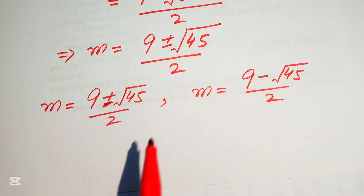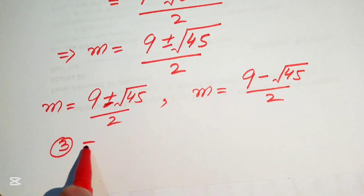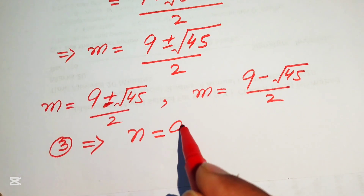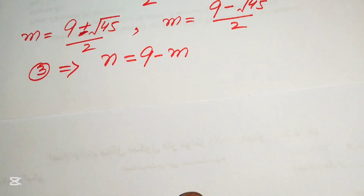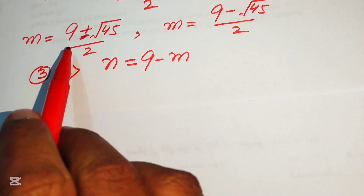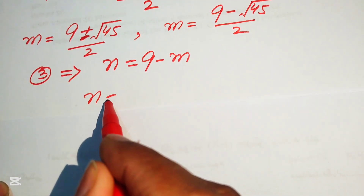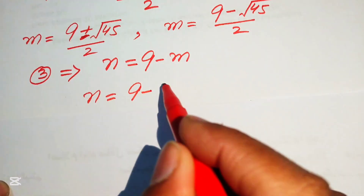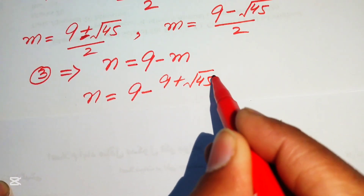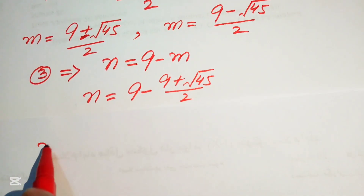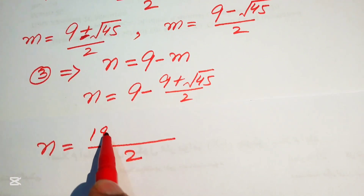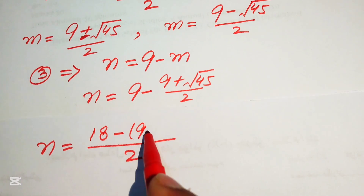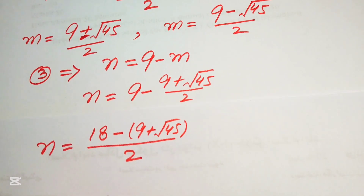From equation number 3, n equals 9 minus m. We substitute the first value of m, which is (9 plus square root of 45) divided by 2. Taking the LCM of 2, we get 18 minus (9 plus square root of 45), all divided by 2, which gives n equals (9 minus square root of 45) divided by 2.